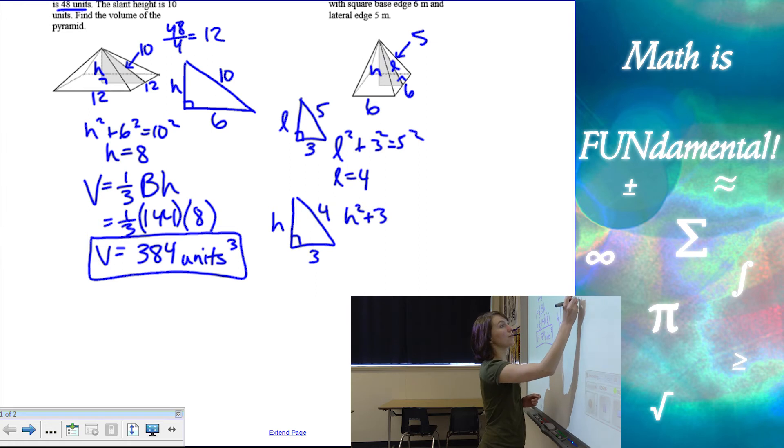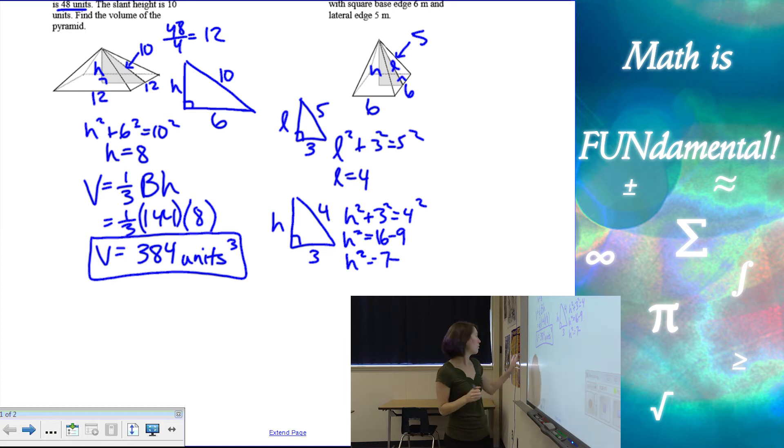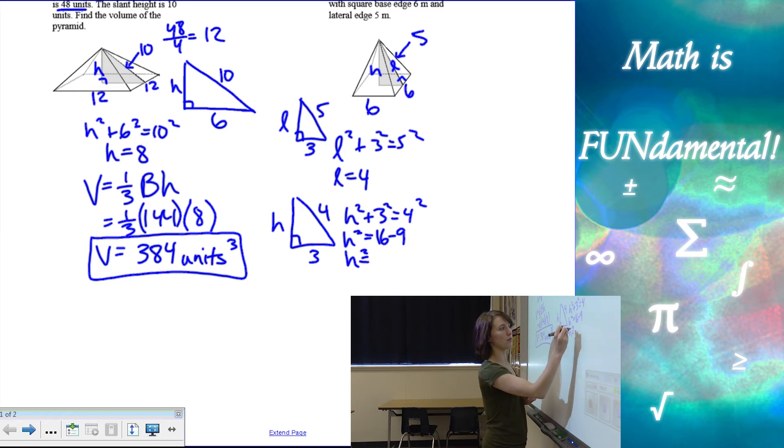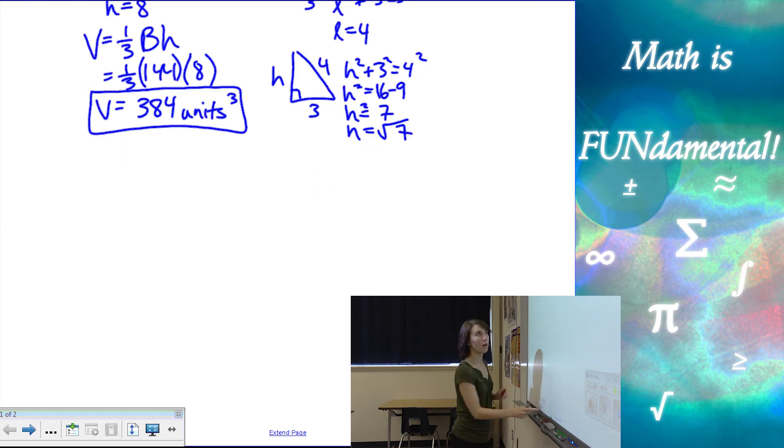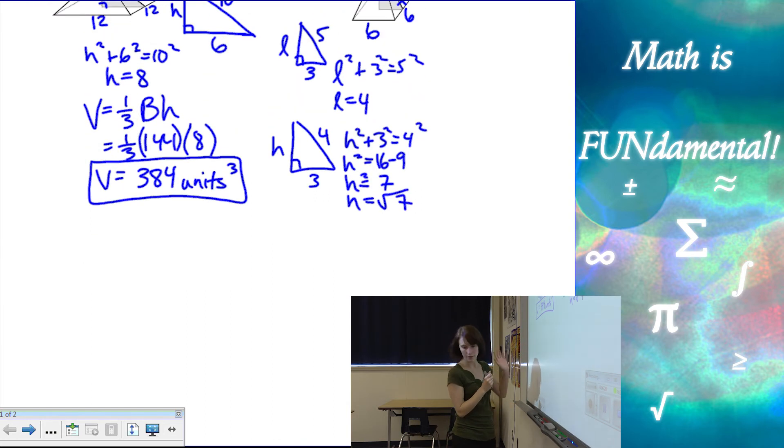h² + 3² = 4², so h² = 16 - 9, which is 7. So h² is 7, so h is the square root of 7. Okay, so now, let me expand my board here.